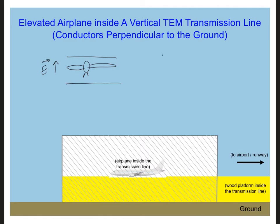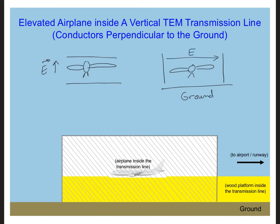So now, if I do a front view, our plates of the transmission line are vertical and our airplane is inside horizontal, which means, of course, we have the ground here. But the electric field now is parallel to the longest dimensions of the airplane.